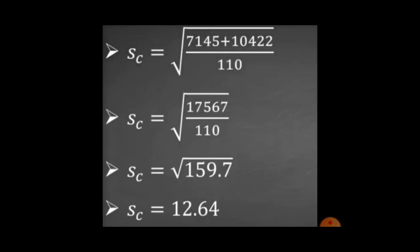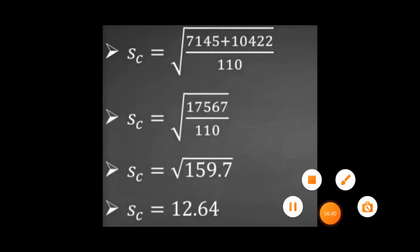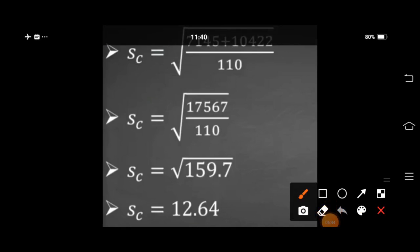Combined standard deviation equals under root of: 50 times 142.90 = 7145, plus 60 times 173.70 = 10422, total 17567, divided by 110. Under root of 159.7. Combined standard deviation equals 12.64.